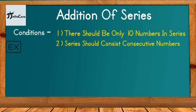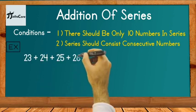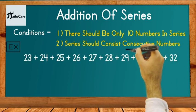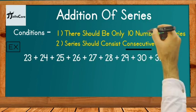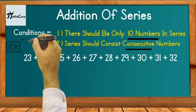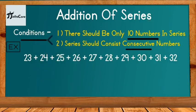So let's take example on it. Example is here 23 plus 24 plus 25 plus 26 plus up to 32. So you can see that in this series all numbers are consecutive numbers and exactly 10 numbers are given there from 23 to 32. So this series can satisfy both two conditions so that we can proceed further.